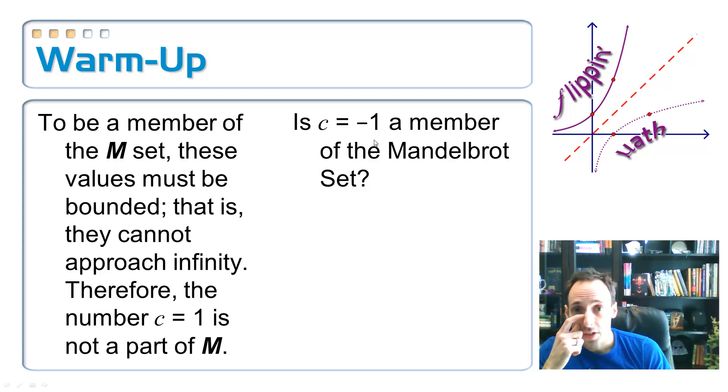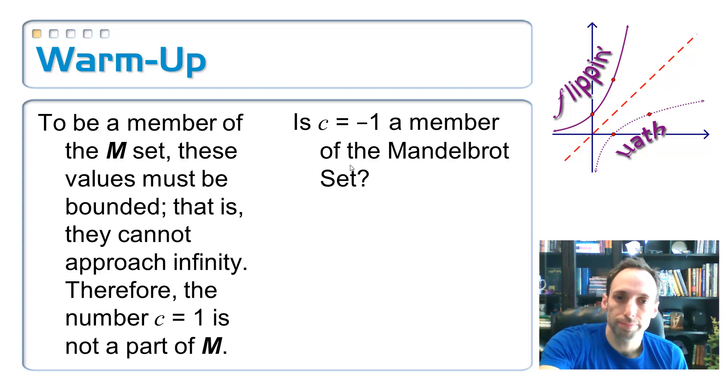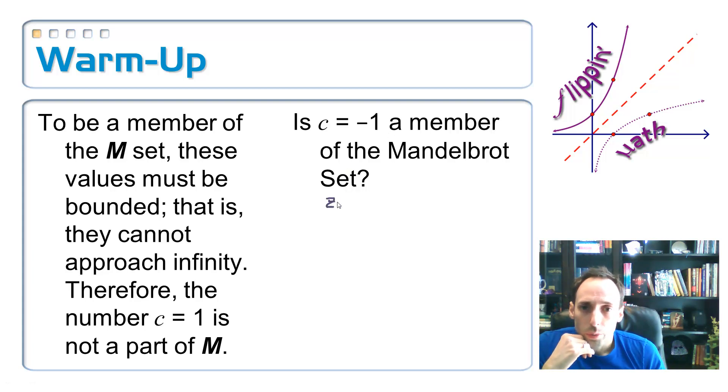So let's check to see if C equals negative one is a member of that set. So I always start with C sub zero equaling zero. C sub one, I'm going to take that zero and I'm going to square it plus my C value, which is negative one. Zero squared zero plus negative one is negative one. So to find C sub two, I'm going to take this number and I'm going to square it. So negative one squared plus negative one is equal to, so negative one squared is just positive one plus a negative one is zero.